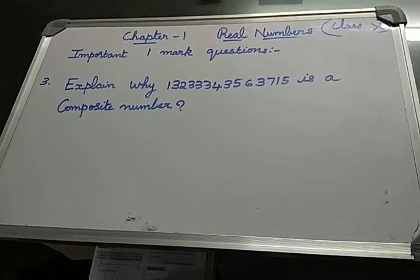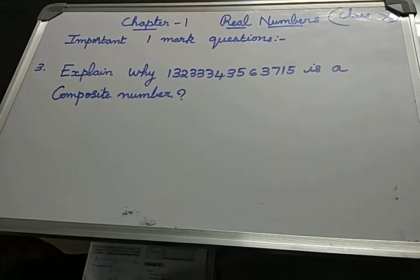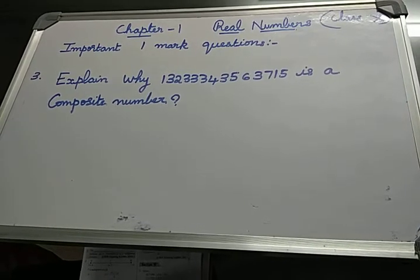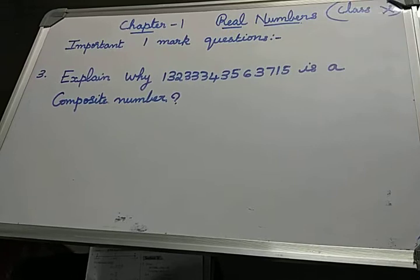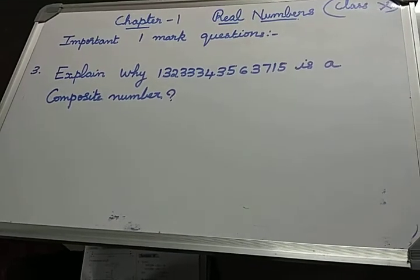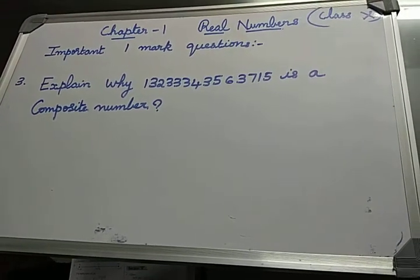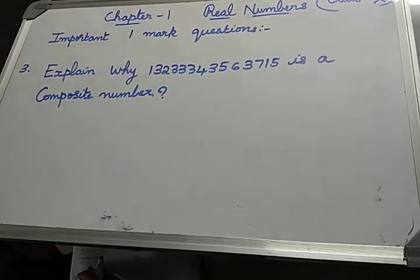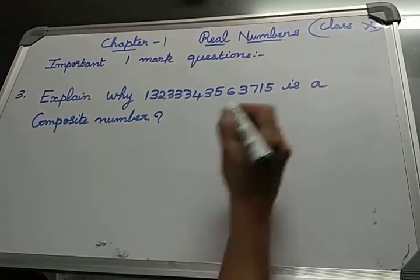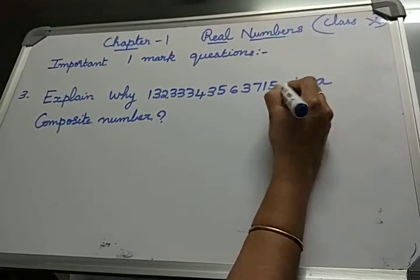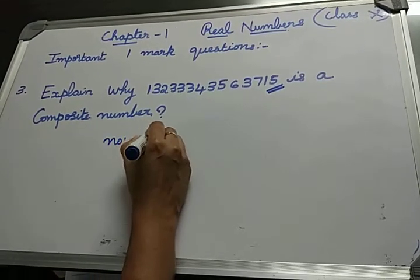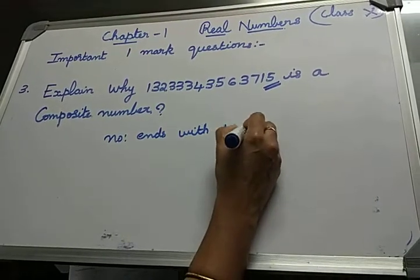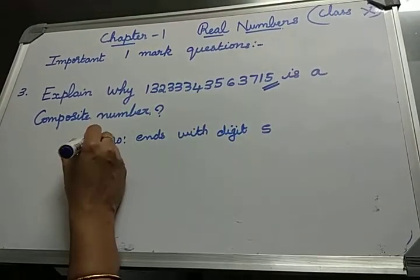Question 3: Explain why a big number is a composite number. We know composite numbers have more than 2 factors. Don't get scared by the big number - it's simple. Can you say what digit this number ends with? The number ends with digit 5.